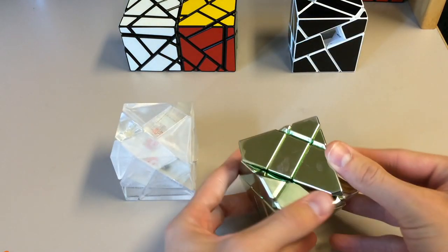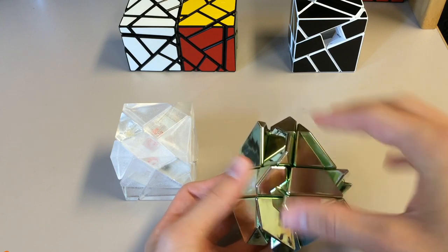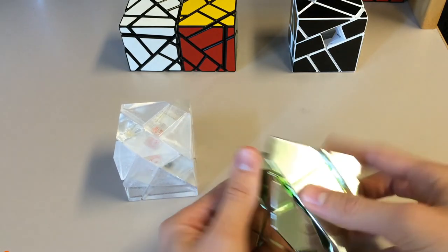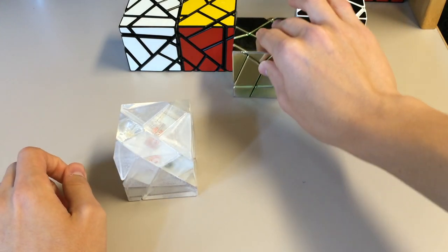For example, like on this green one, sometimes I'll be turning this and then that will happen. Like that side just kind of wants to turn. And then you're like nope, sorry, you're not going to turn. I want this other layer to turn.